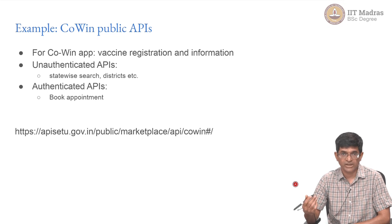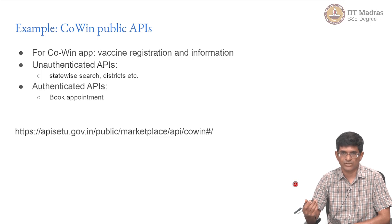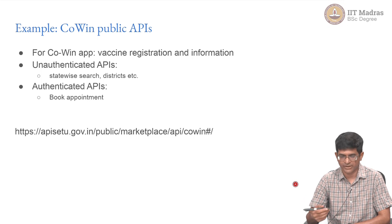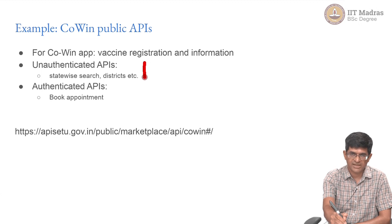By having that separation it makes it cleaner to design the way that the data is stored and handled. The numbers we are talking about are huge — you have to assume that at some point all of India's population is going to be in this database, or at least 60–70 percent minimum. There are some unauthenticated APIs largely for searching and some authenticated APIs for booking appointments.